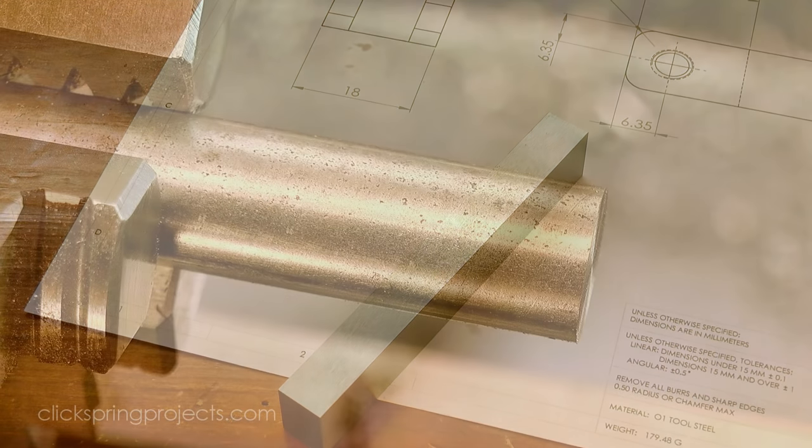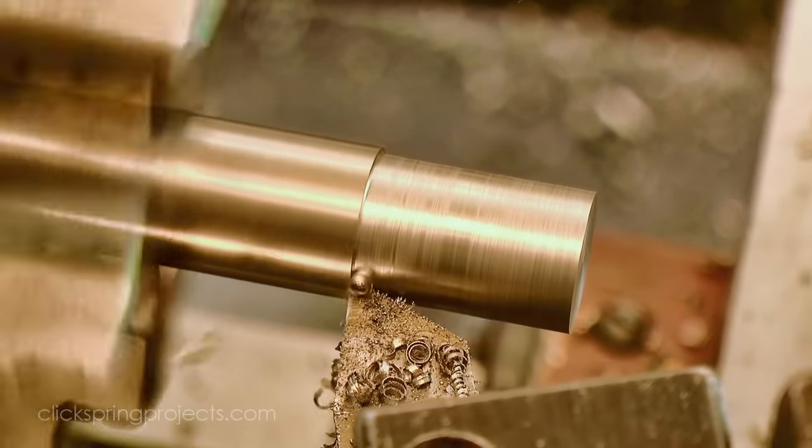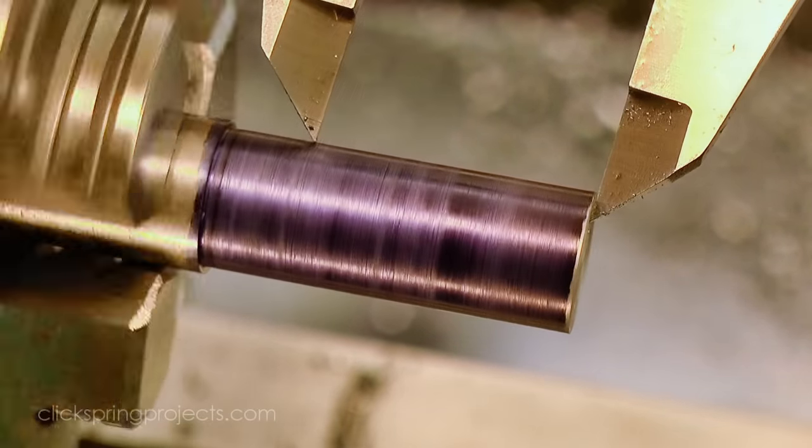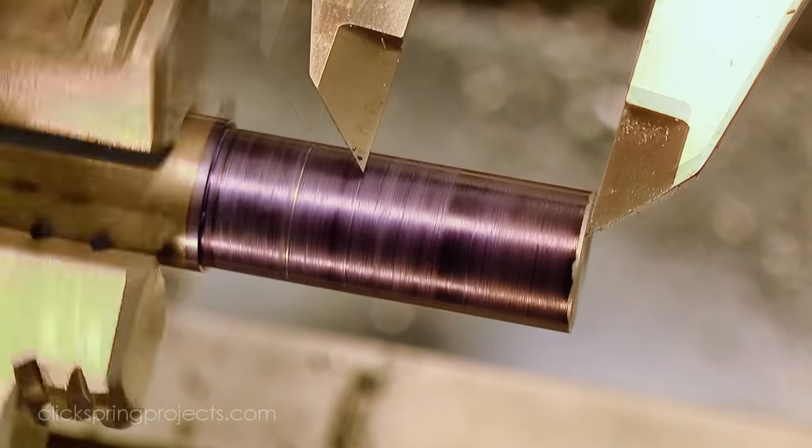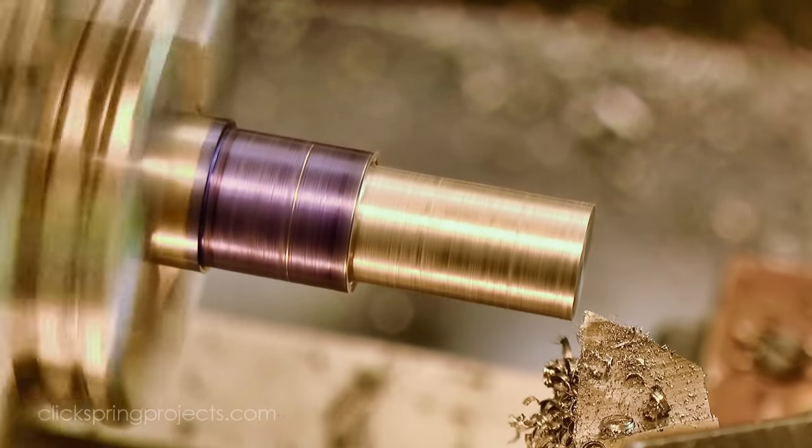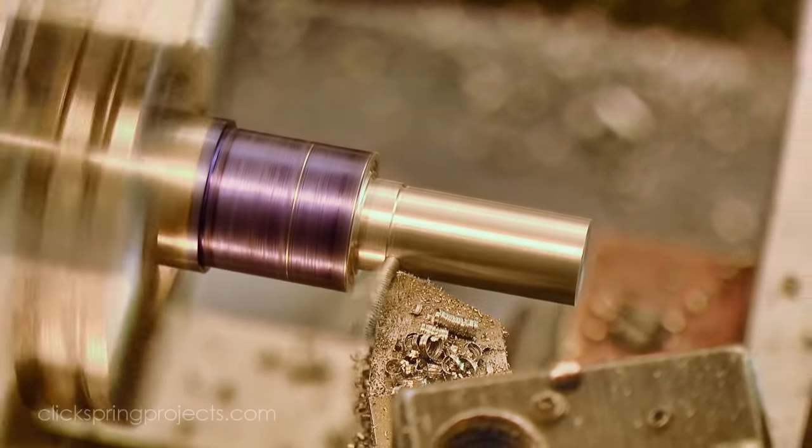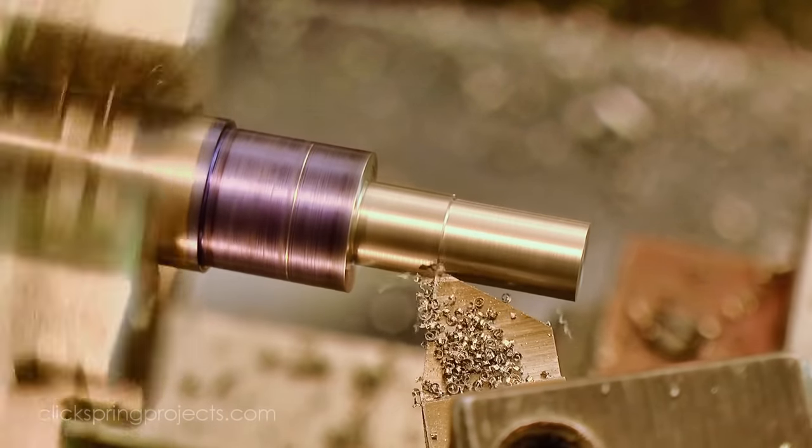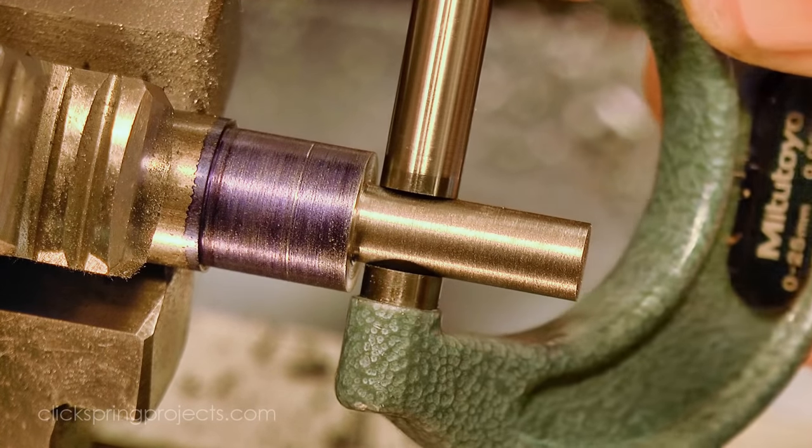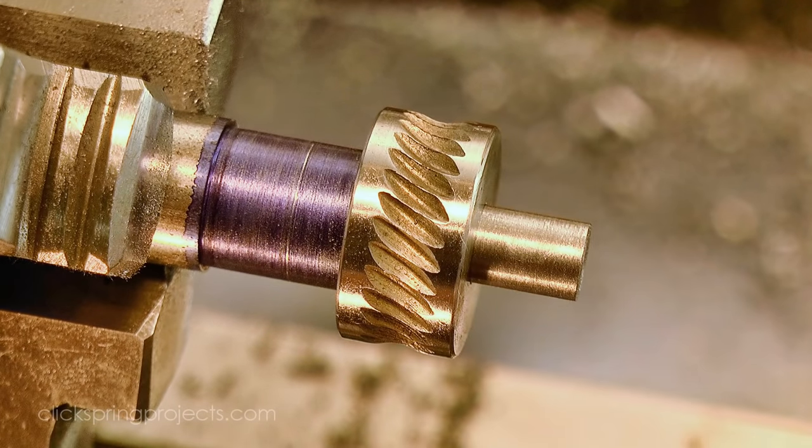I loaded the rod stock into the lathe and then turned the basic profile of the axle. A quick check of the axle diameter confirms that the knurl will be a close fit and that it will also run freely.